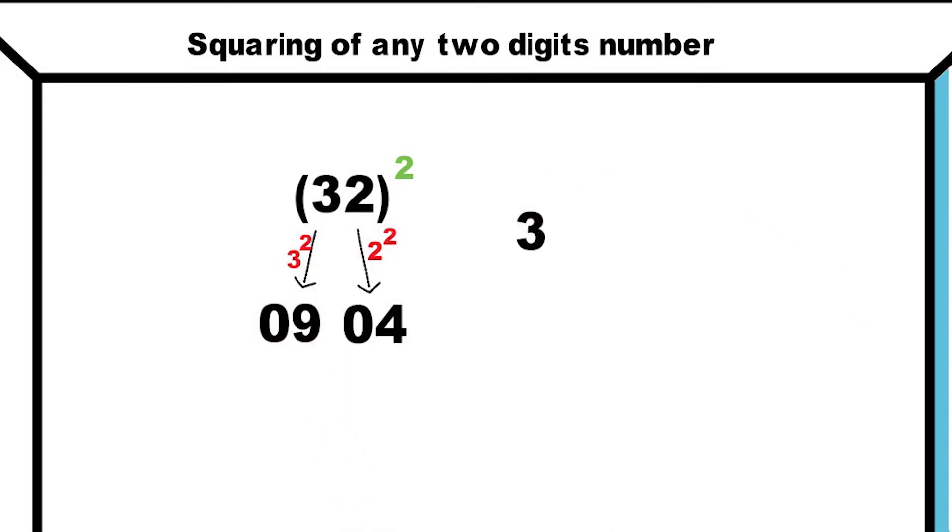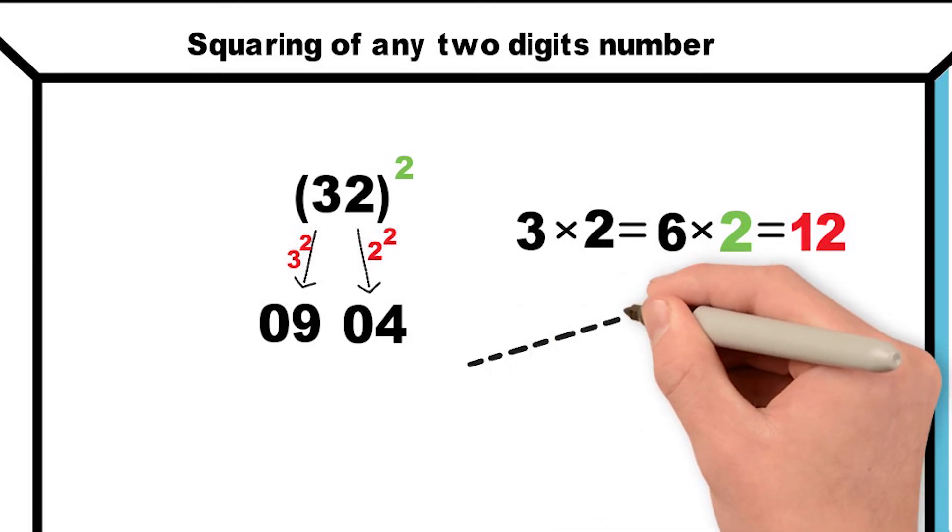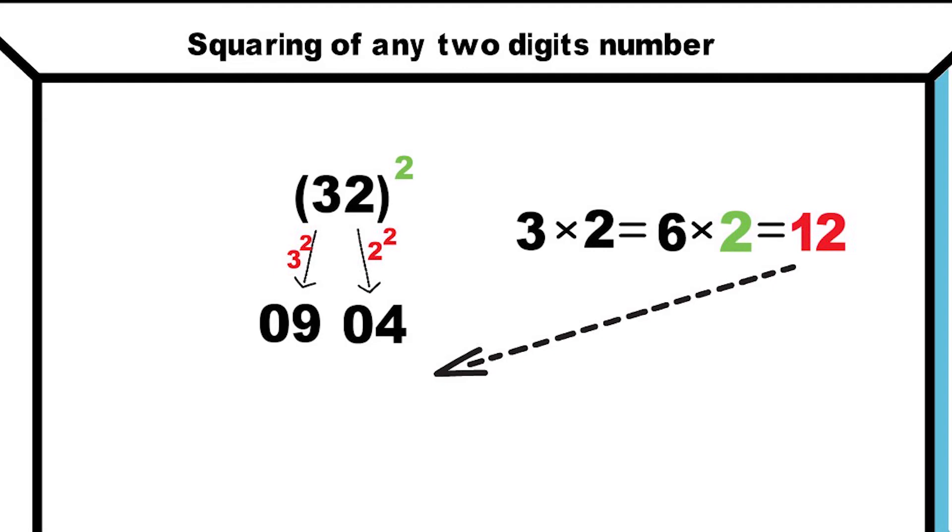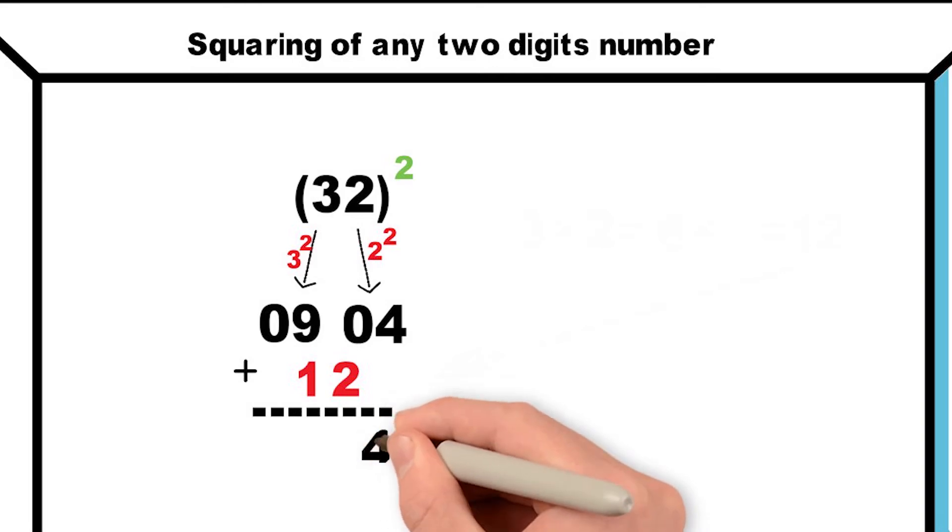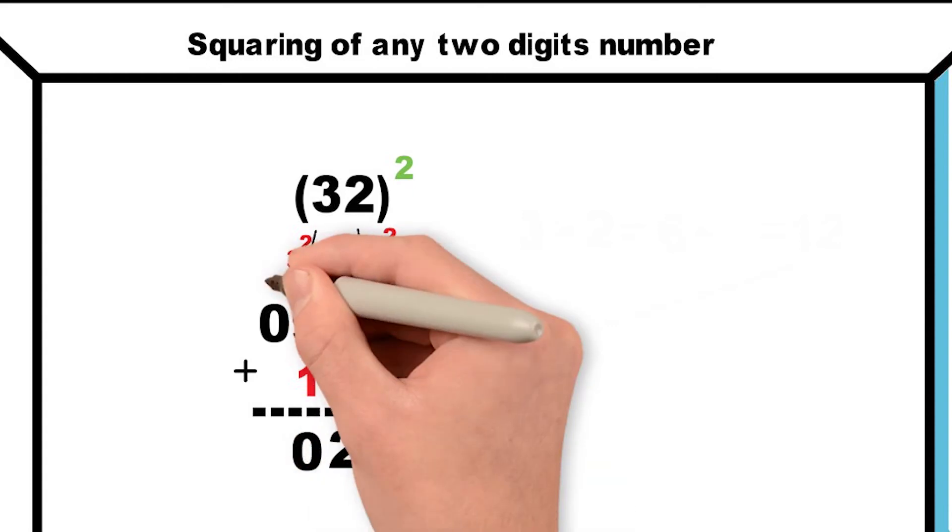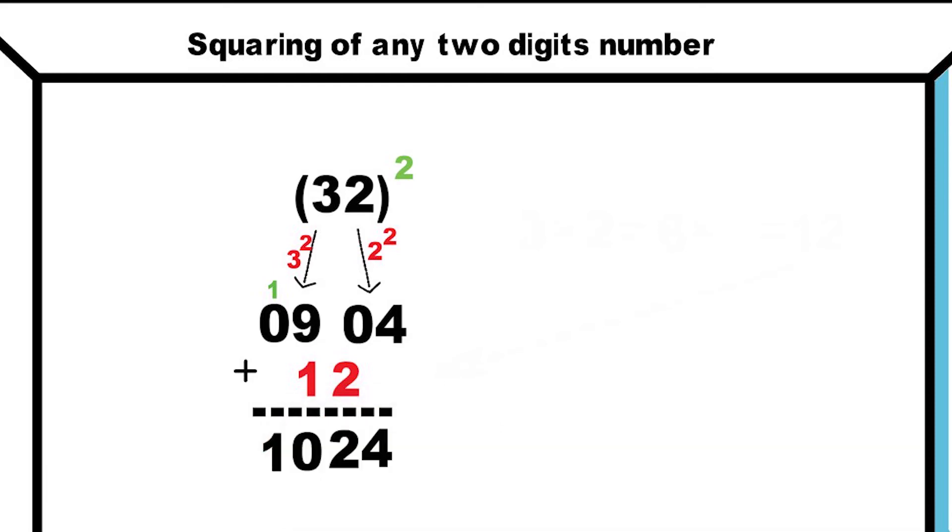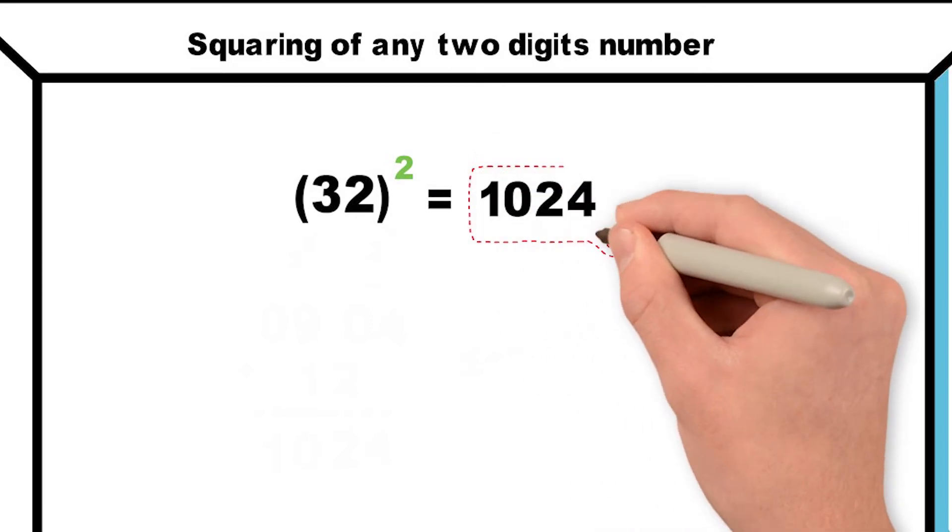Then we will multiply the digits of our question, means 3 into 2, which is 6. Here we double our 6 because we are squaring the number, so 6 into 2 is 12. Now we will add this 12 with 09 04 after leaving the unit place. After addition: 2 plus 0 is 2, 9 plus 1 is 10, write 0 and 1 carry forward, 1 plus 0 is 1. Hence, 1024 is our required answer.